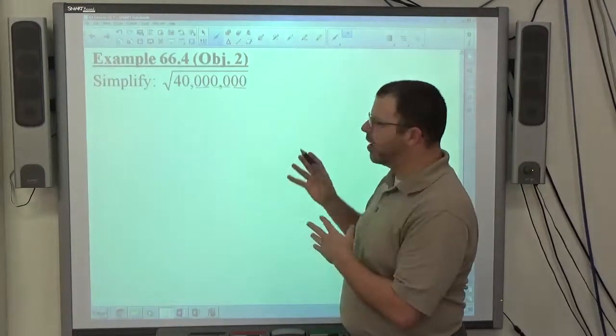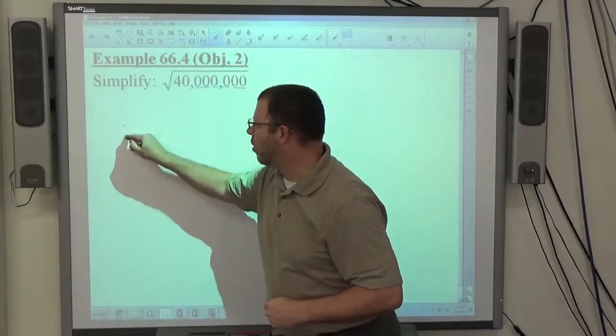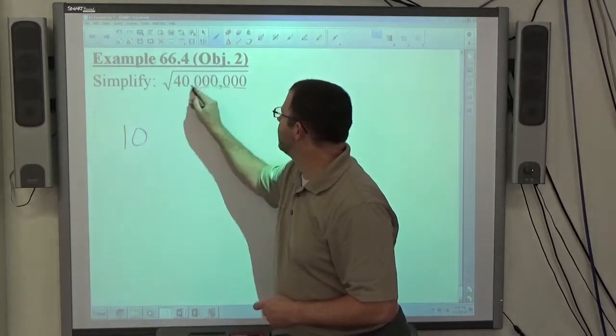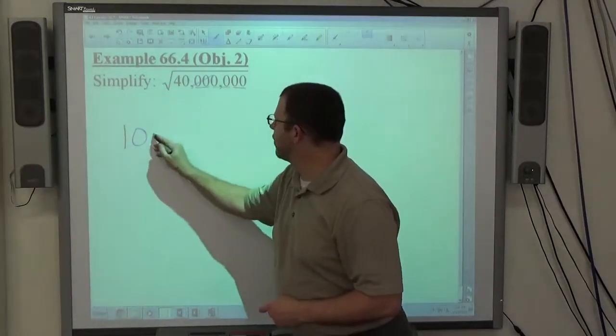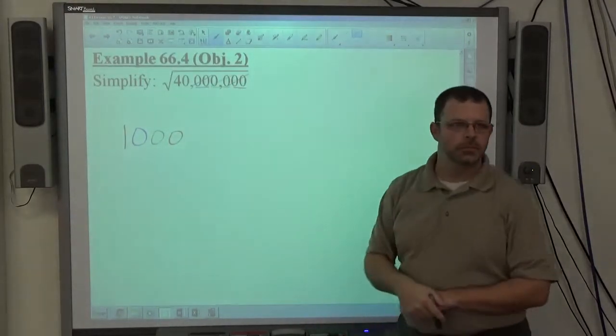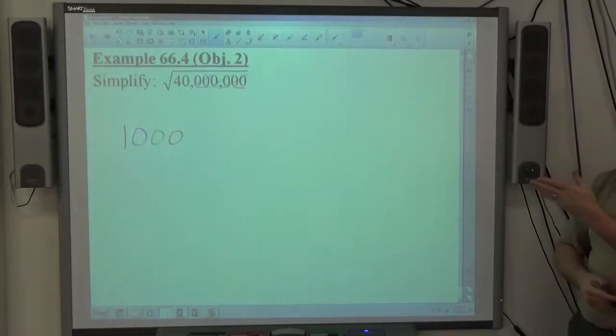So, this whole idea about pulling out these zeros, I always start with a one, followed by a zero for that pair, a zero for that pair, and a zero for that pair. So, all together, those six zeros, I get to pull out a thousand.